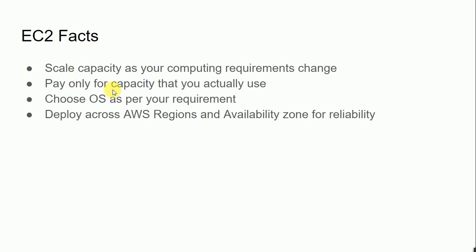Pay only for the capacity that you actually use. It is considered pay-as-you-go — whatever instance type you use, you need to pay for that only. You can also choose your operating system as per your requirement; there are numerous operating systems available with Amazon.